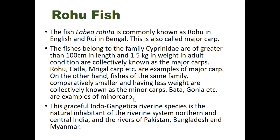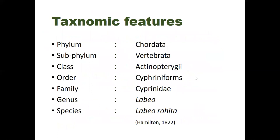This graceful Indo-Gangetic riverine species is the natural inhabitant of the riverine systems of northern and central India and also the rivers of Pakistan, Bangladesh, and Myanmar. It is used in commercial carp polyculture systems because of its high growth potential and high consumer preference, establishing it as the most important freshwater species cultured in the subcontinent.